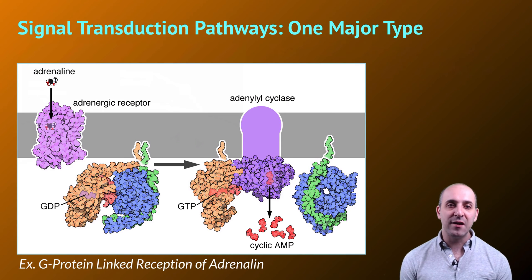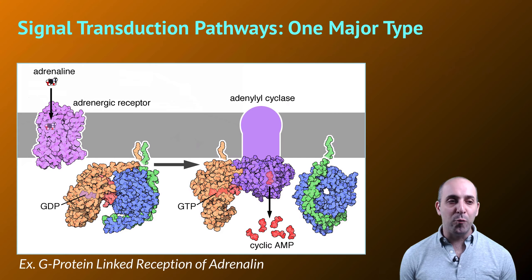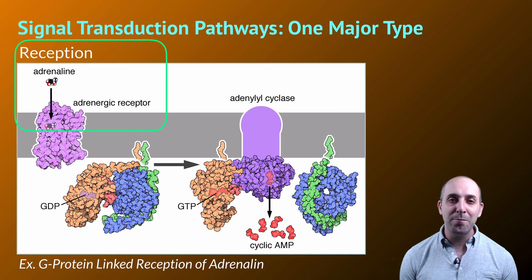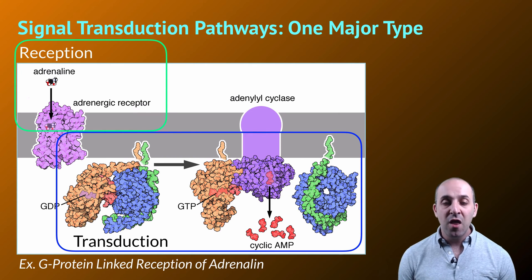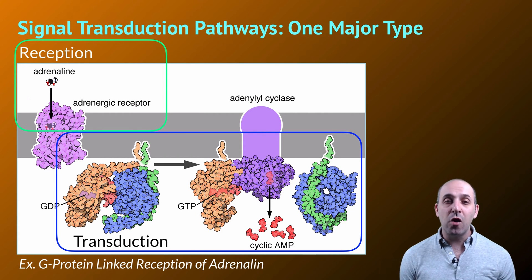Let's look at one specific example of a signal transduction pathway — a widely distributed one in our bodies known as G-protein linked reception. This is an amine hormone, so it will be received at the cell membrane with a membrane-bound receptor. Once that reception occurs, the receptor protein will interact with a G-protein. G-proteins are incredibly common proteins for membrane-based signal reception. They're called G-proteins because they use GTP molecules — guanine triphosphate — in order to carry out their transduction response. They activate other proteins in the pathway by adding phosphates from the GTP molecule, which activates the enzyme adenylyl cyclase, causing it to produce molecules of cyclic AMP — a second messenger.